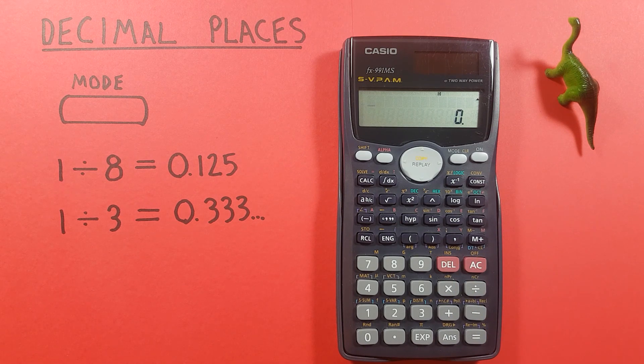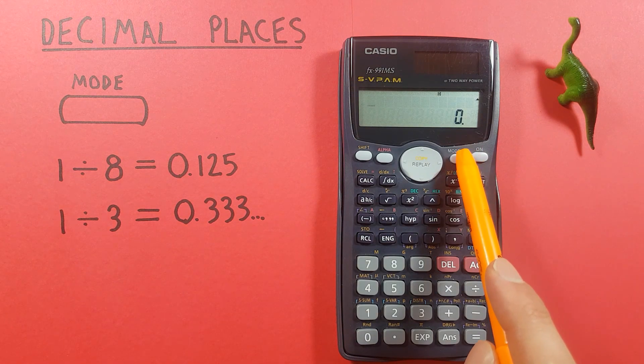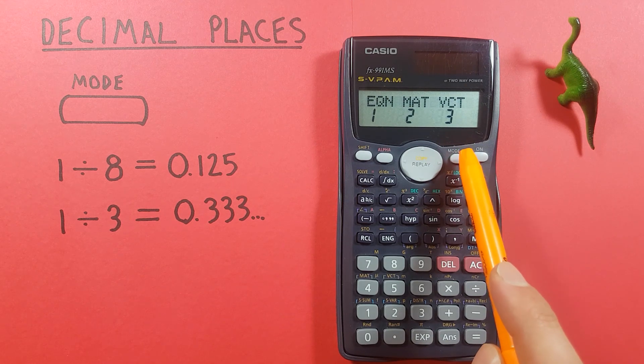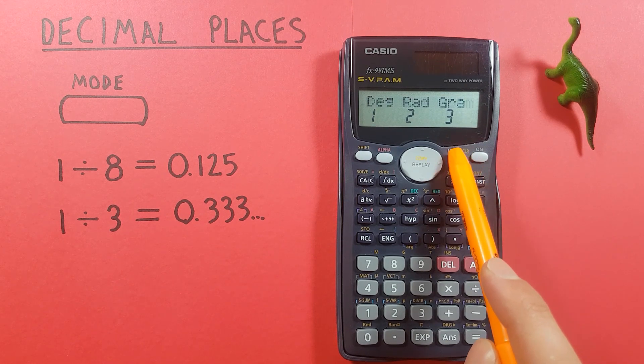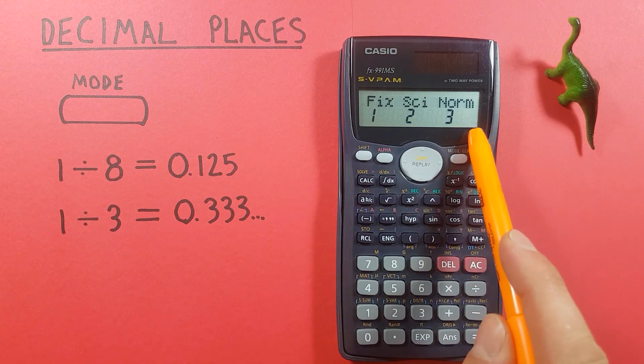But what if we want to only get say two decimal places in our answer? Well to do that press the mode key here once, twice, three, four, five times until we get to this screen here.